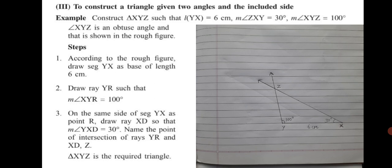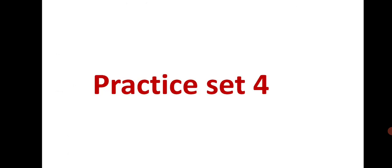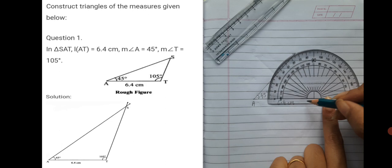This way you are going to construct triangles in this practice set where two angles and one side are given. Now let's begin with practice set number 4, question number 1. In triangle SAT, length AT is given as 6.4 centimeter — that will form the base. The other two angles are angle A is 45 degree and angle T is 105 degree. We show a 45 degree acute angle and a 105 degree obtuse angle, then complete our rough sketch.